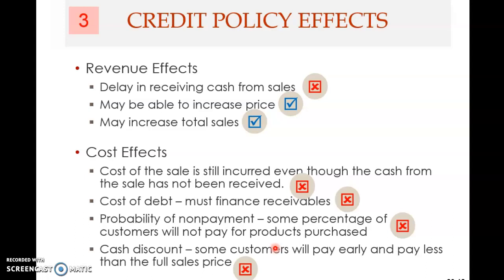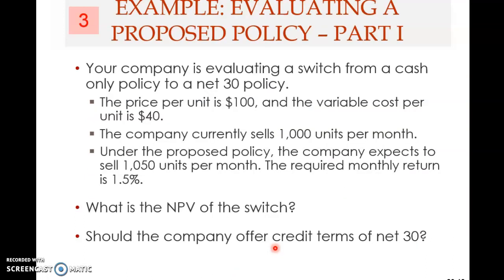If the present value of benefits outweighs costs, then you should provide the credit. If not, then you should not — you should sell on cash basis. That's the idea. Now let's look at an example. Your company is evaluating a switch from a cash-only policy to a net 30 policy. This company is currently selling only on cash basis and is considering whether to change to a net 30 credit policy. Net 30 means you allow 30-day credit — there is no cash discount term here.